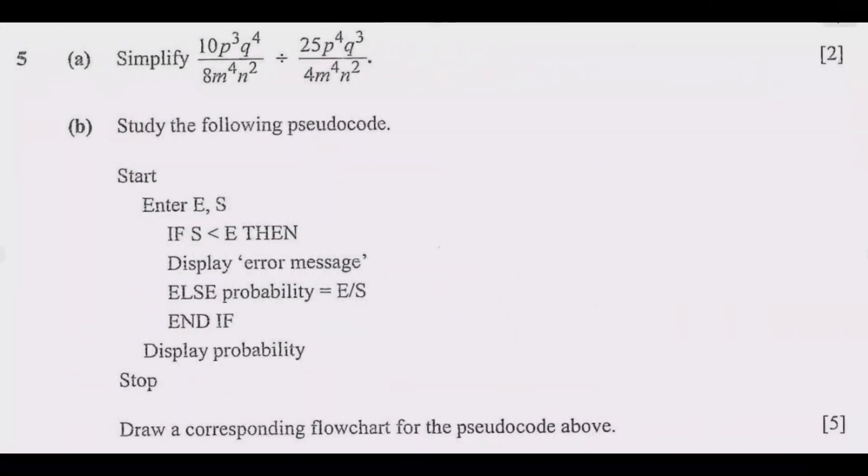So let us look at question 5. 5a, simplify. We are simplifying this expression. Then part b: start the following pseudocode: start, enter e comma s. If s is less than e then display error message, else probability equals e divide by s and display probability, stop. Draw a corresponding flowchart for the pseudocode above.